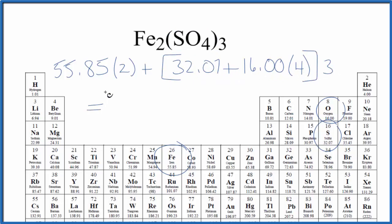When we do that, we do all this math here. Multiply by three and add to this number here. We end up with a molar mass for Fe₂(SO₄)₃ of 399.91 and the units are grams per mole.